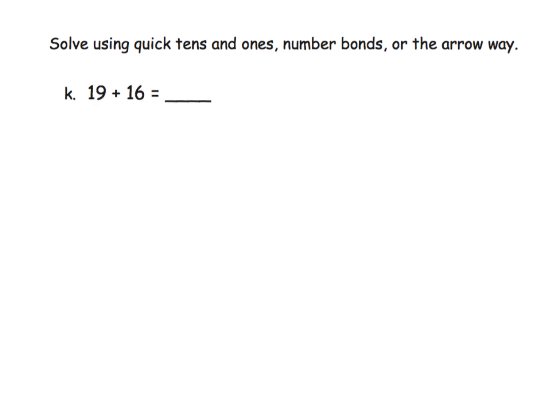And lastly, we're going to do the arrow way on this one. So what I'm going to do is I'm going to start with 19, and I'm going to use the arrow and I'm going to go up 1 to get to 20. Now in my mind, I know that I've used up 1, so I have 15 more to go. I can either do that in one step or I could do it in two steps. So let me do it in two steps.